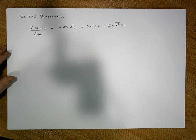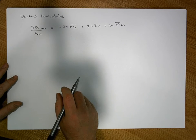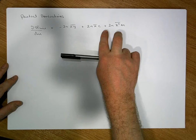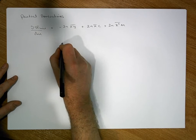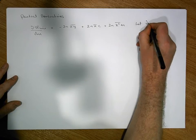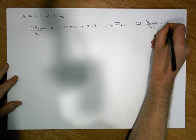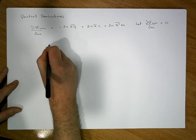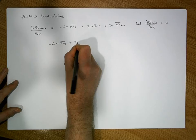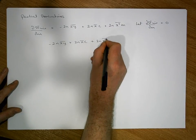This needs to be set equal to zero. Setting ∂S_e/∂m = 0, we have minus 2nxȳ plus 2nx̄c plus 2nx²̄·m must equal zero.